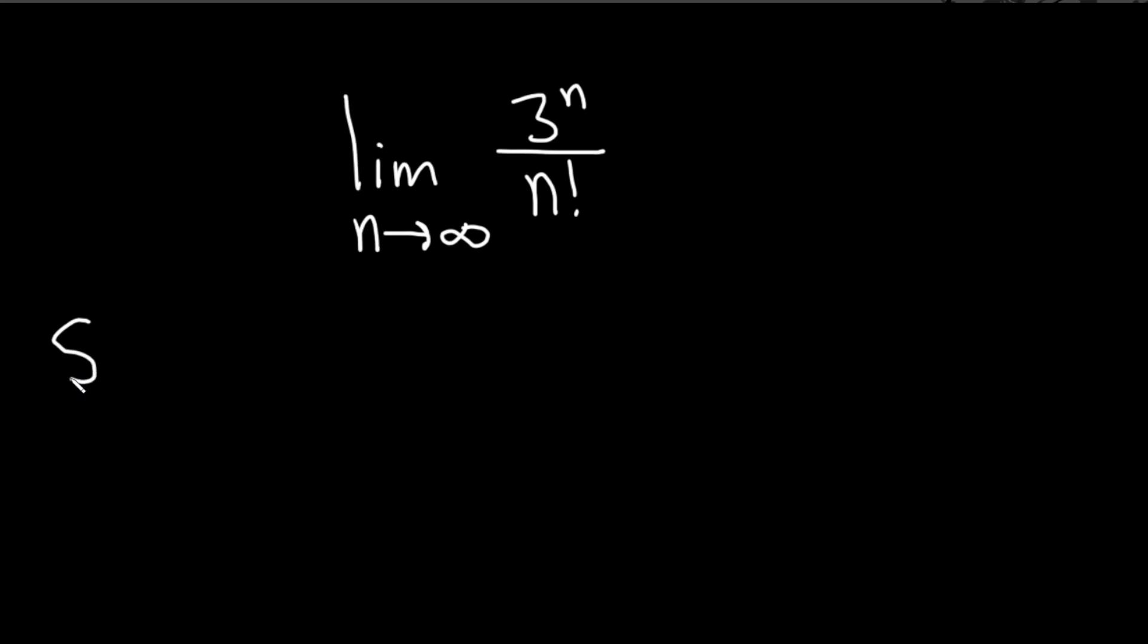Let's go ahead and work through this solution. I'm going to start by writing it again. We have the limit as n approaches infinity of 3 to the n divided by n factorial.